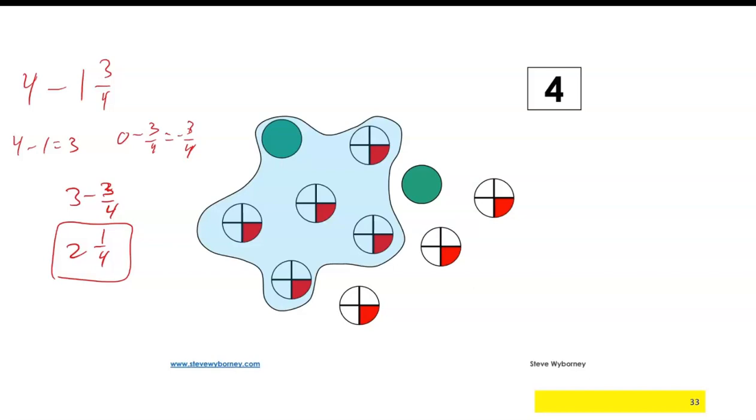And if I uncheck, there is one whole right there, and then there are four quarters there and one quarter left over. So two and one quarter does check.